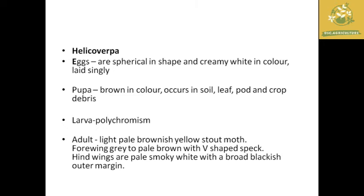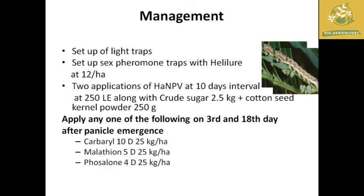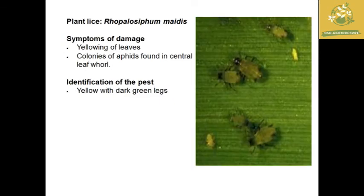Additional notes on Helicoverpa in sorghum: eggs are spherical, pupa is brown, and larvae show polyphagy — meaning larvae are able to feed on different host crops. Management includes setup of light traps and pheromone traps at 12 per hectare, application of Helicoverpa armigera NPV to destroy insects, and insecticides like carbaryl, malathion, and phosalone 4D at 25 kg per hectare.